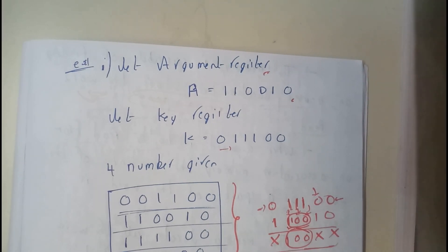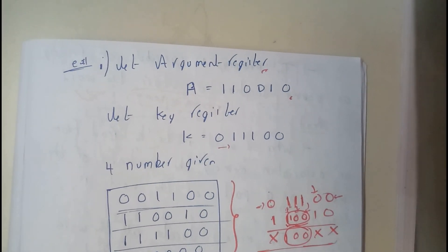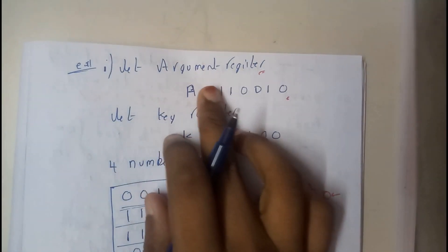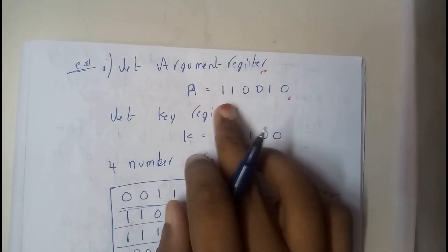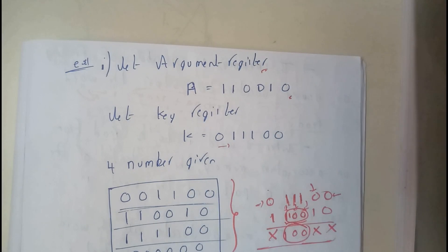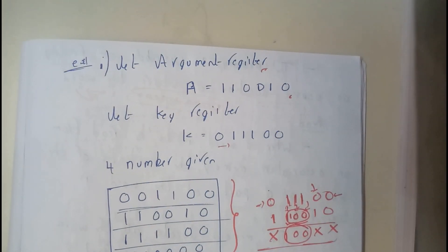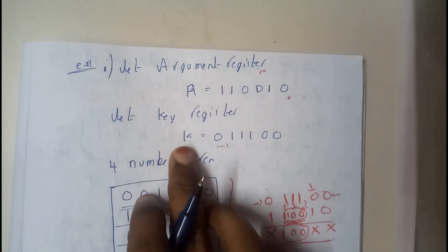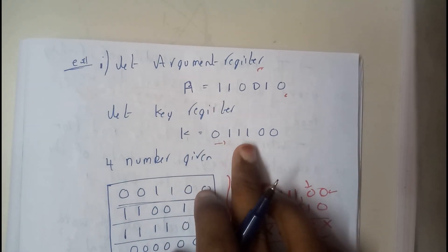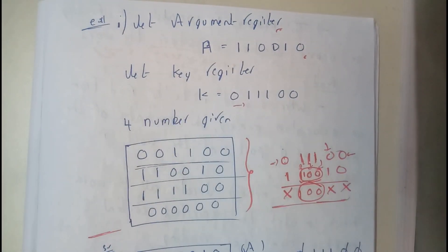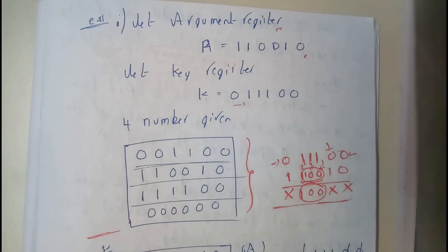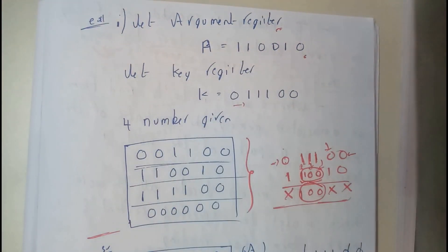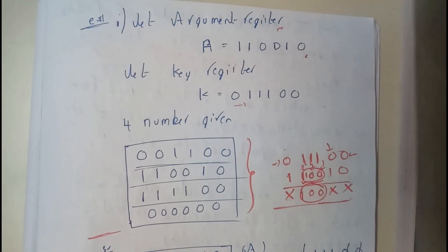So let us take an example. So basically, let the argument register A equals 110010. So that is the argument register and the given key is 011100. So they gave 4 numbers. Let us assume that there are only 4 numbers. Now we are finding whether there is a match with K or not.